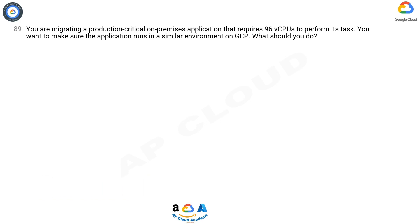You are migrating a production-critical on-premises application that requires 96 vCPUs to perform its task. You want to make sure the application runs in a similar environment on GCP.